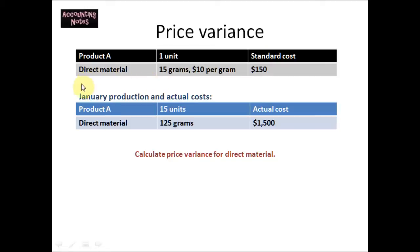However, in January there was a production of 15 units and these are the actual costs. For product A, direct material cost was $1500 actual cost in which 15 units were produced and 125 grams were used.